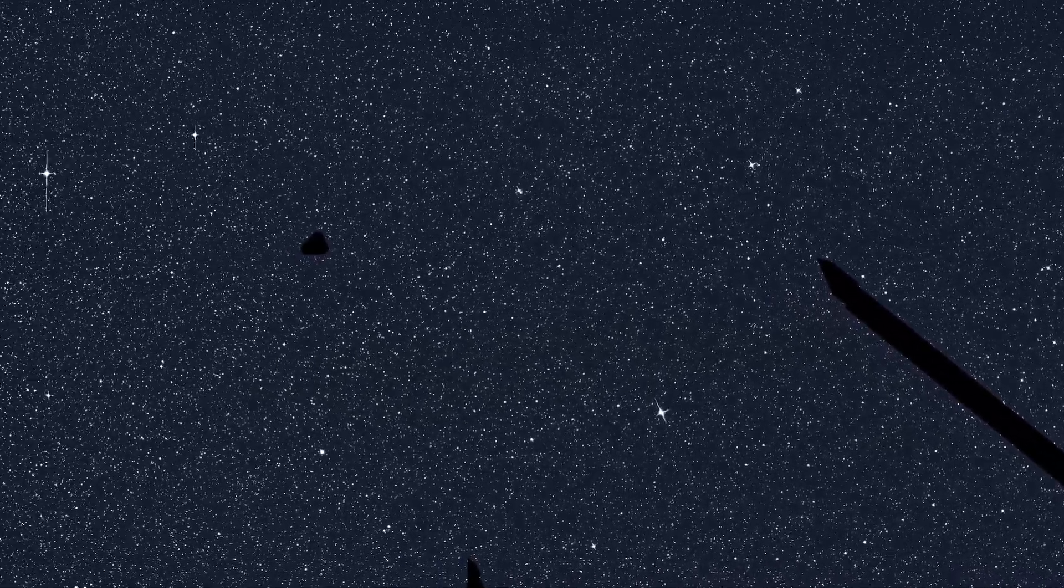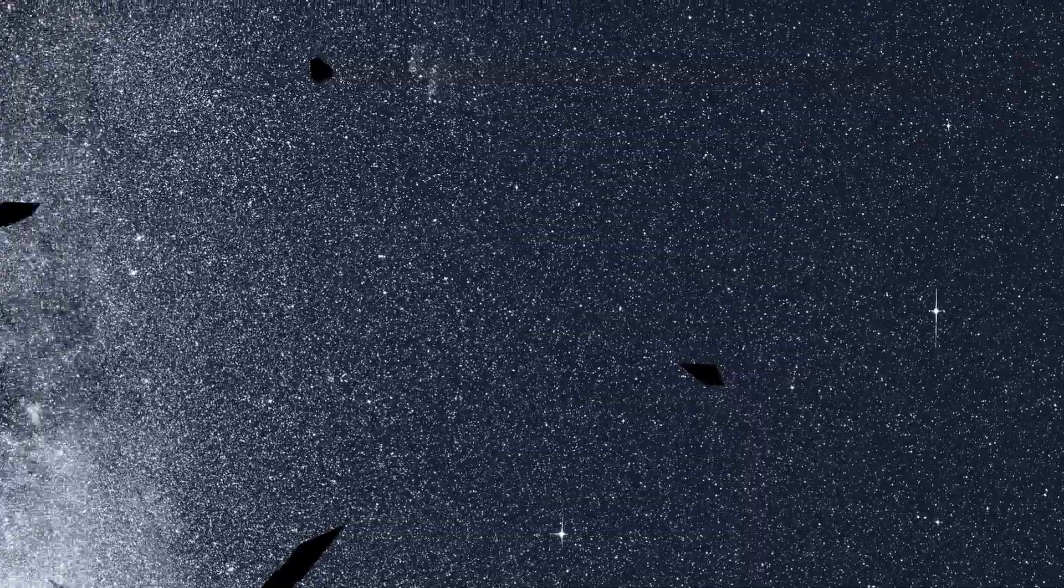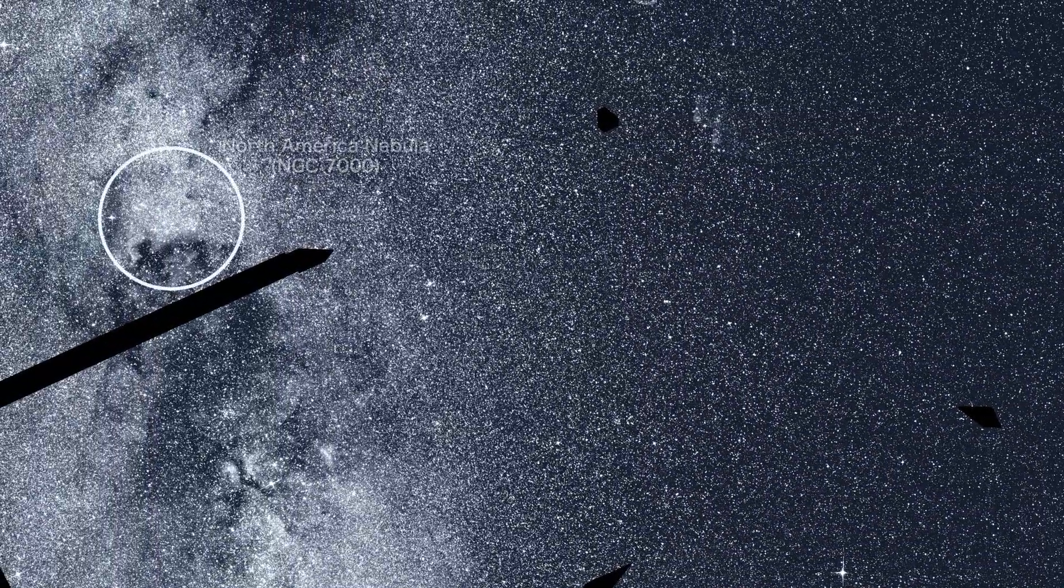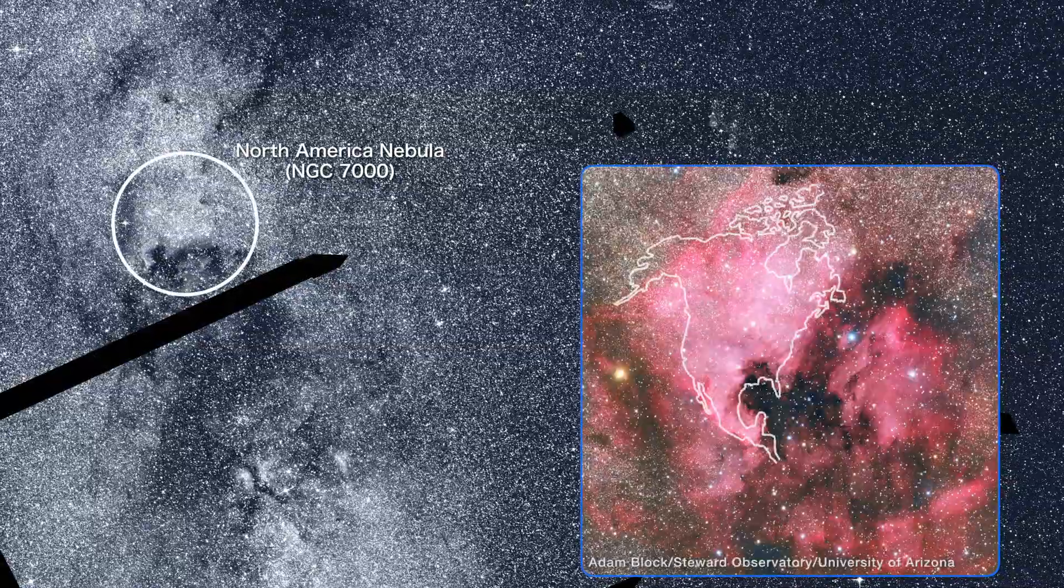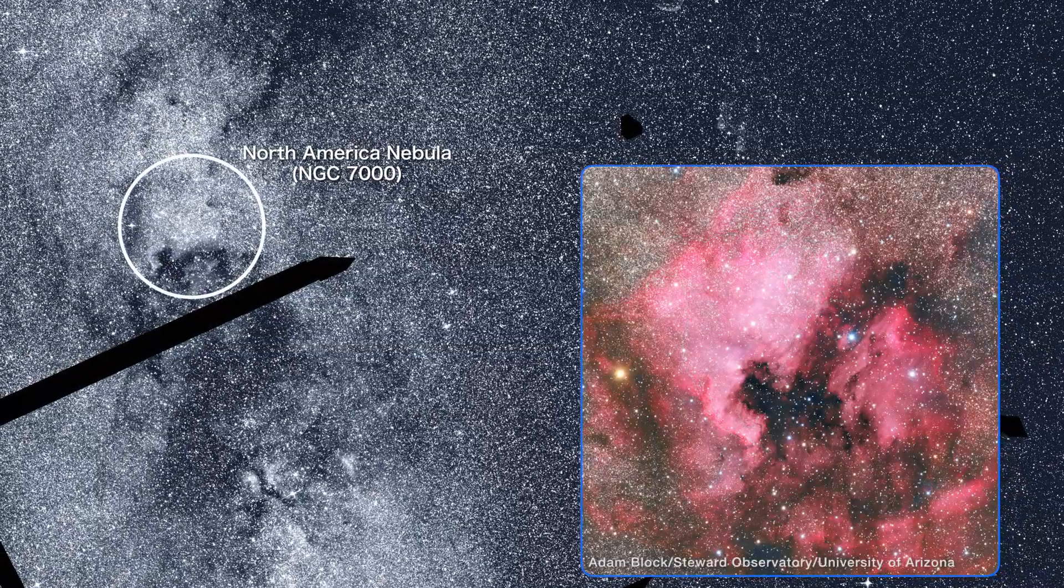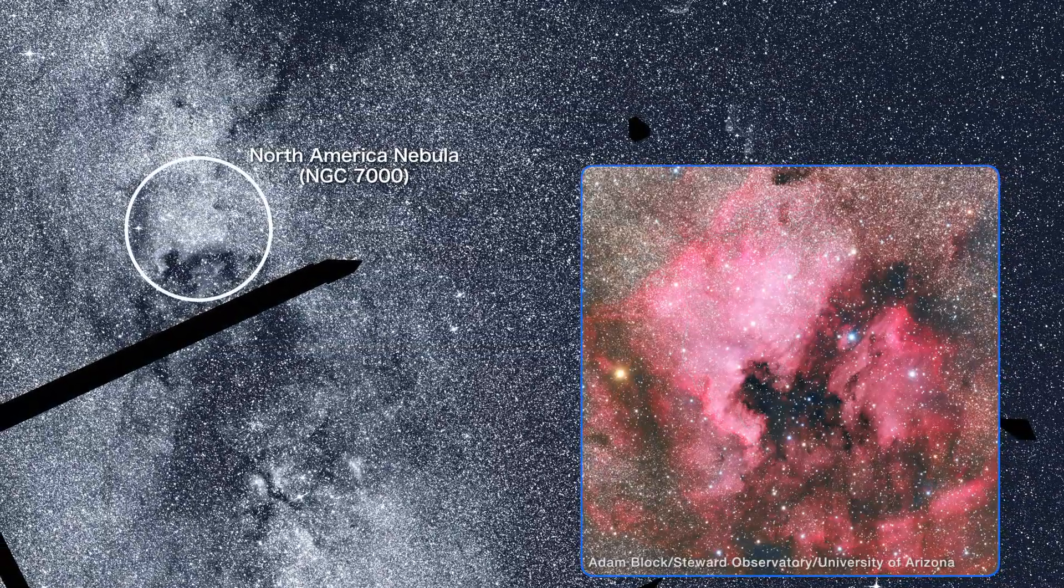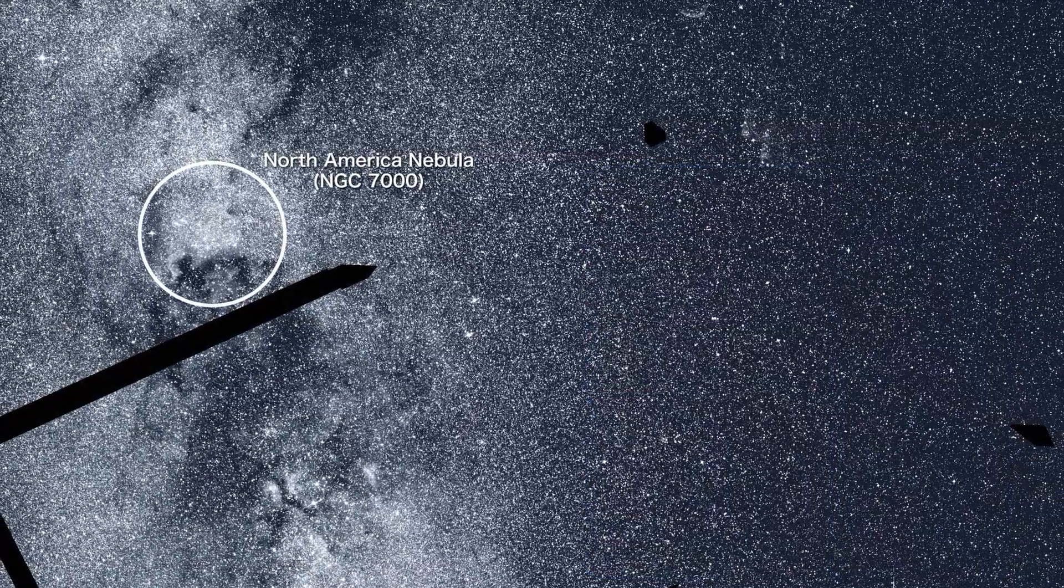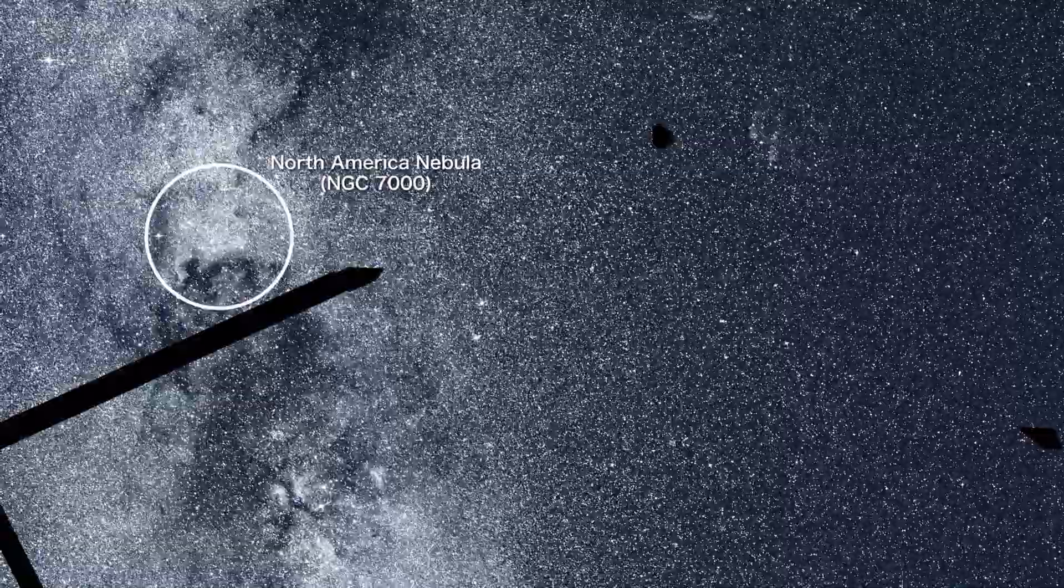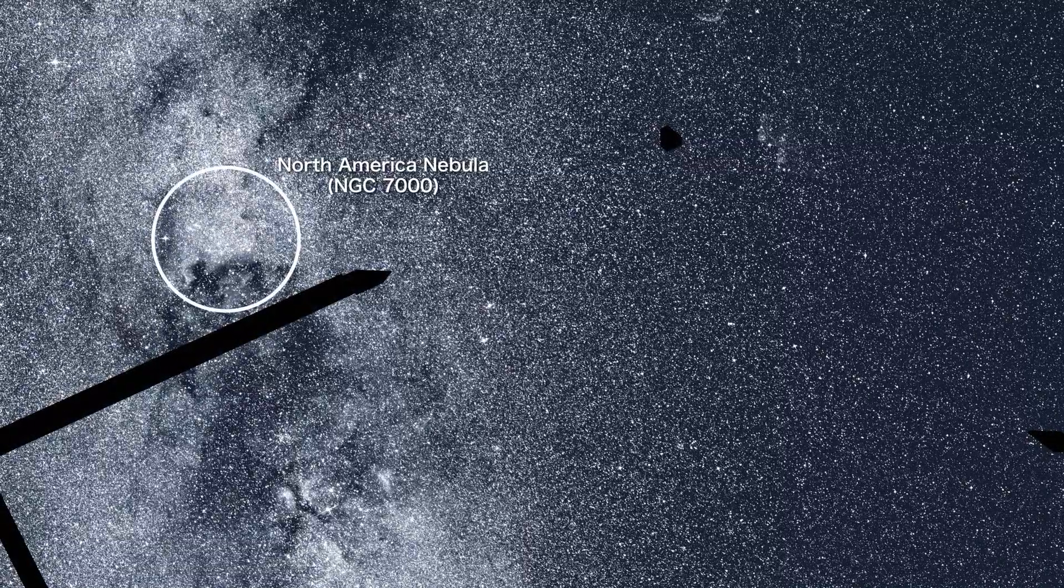New stars form in gas-rich clouds throughout our galaxy. The North America Nebula, named for its resemblance to the continent, is a prominent example. Located about 1700 light-years away in the constellation Cygnus, it's part of a vast factory complex with enough gas to make 100,000 sun-like stars.